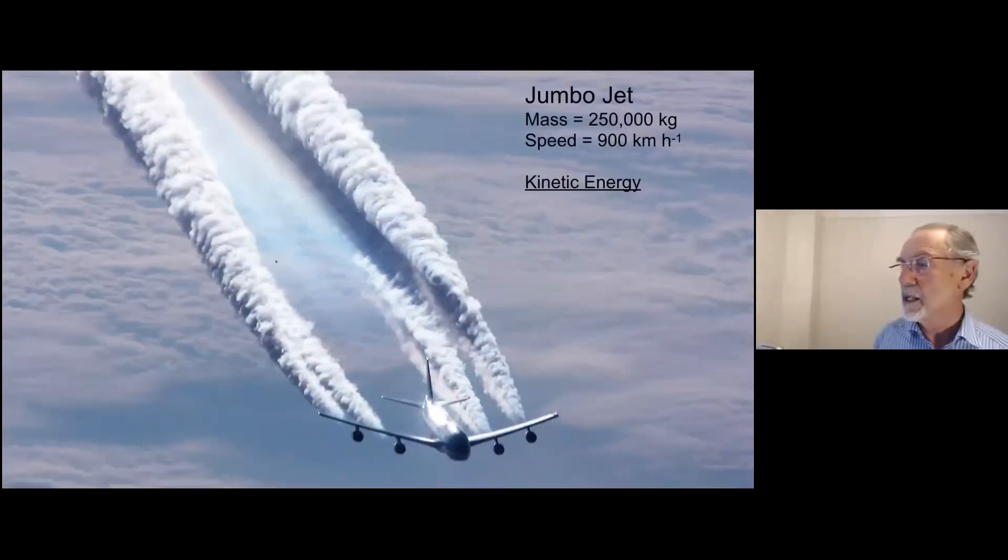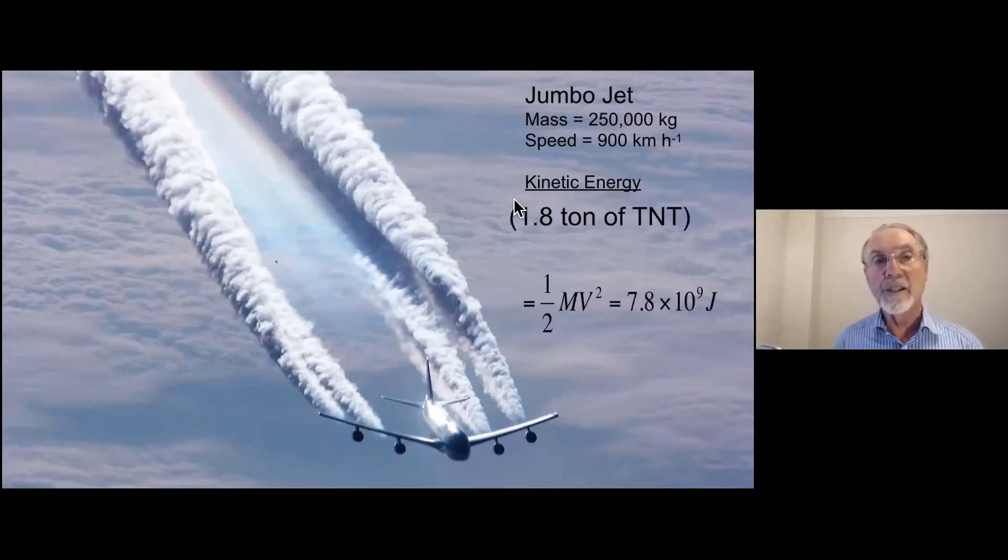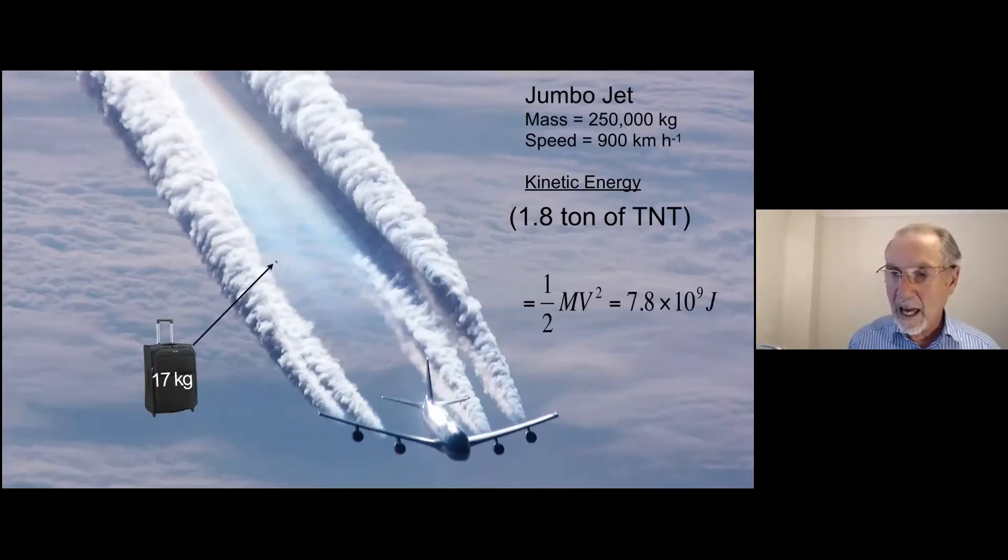Now, just to give you some idea of the kinetic energies we're talking about here, here is a jumbo jet at its cruising speed. There are the parameters there. Its kinetic energy is equivalent to about 1.8 tons of TNT. Now, if you look closely, you will see my suitcase there flying through the air, and my suitcase weighs 17 kilograms. And if my suitcase is traveling at the speed that the Earth orbits the sun, 30 kilometers a second, it will have the same kinetic energy as this entire jumbo jet. It's all that V squared stuff.